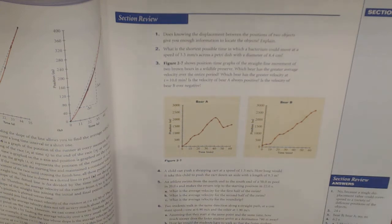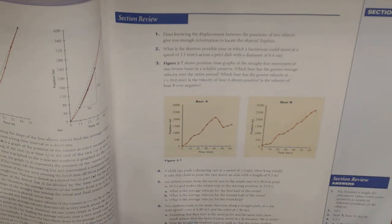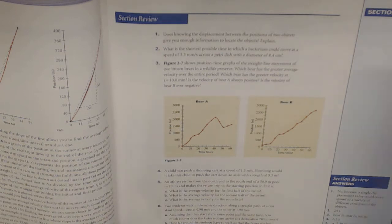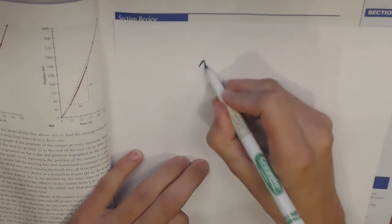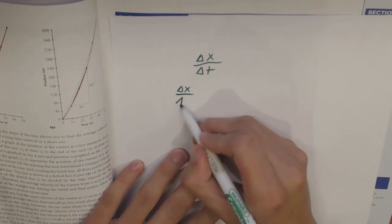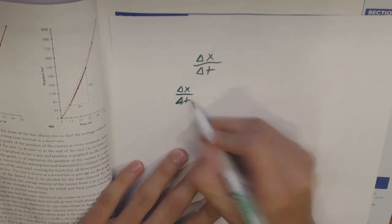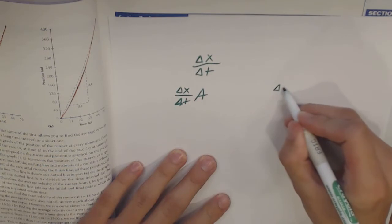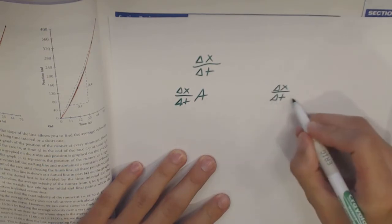Question 3 says: Figure 2.7 shows the position-time graphs of the straight-line movement of two brown bears in a wildlife preserve. Which bear has the greater average velocity over the entire period? To find the greatest average velocity, average velocity is change in distance over change in time. So we have to look at the change in distance over the change in time for bear A, and the change in distance over the change in time for bear B.